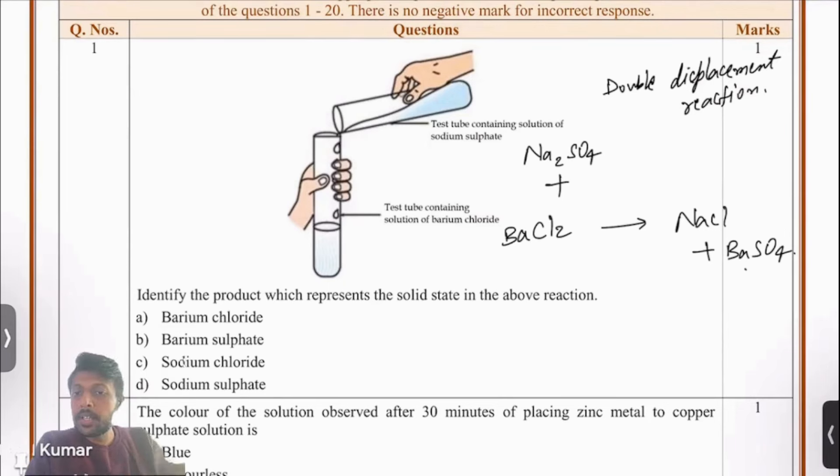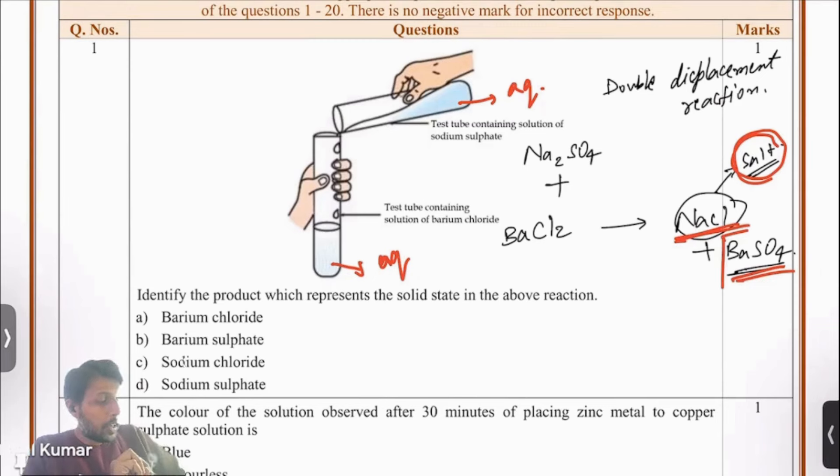We all know NaCl is salt. Look at the picture associated with the question. Both the solutions are aqueous, both are in water. We know that salt is soluble in water, so this is not going to appear as a precipitate. What is going to appear as a precipitate? The other one. Even if you had no clue about this, you could still answer this. The answer is going to be barium sulphate.